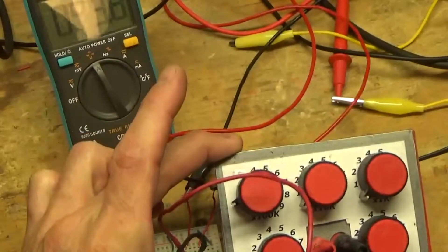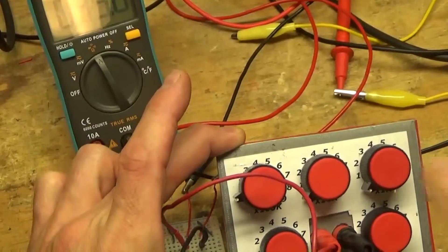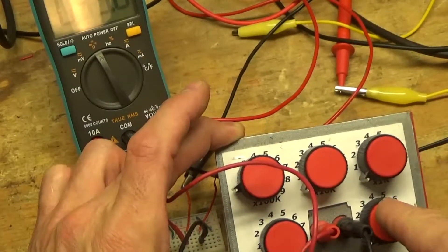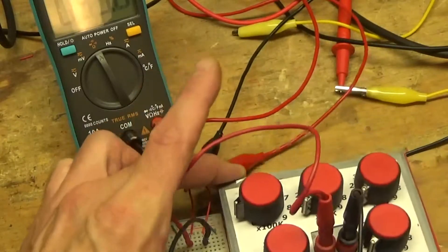So I put the knobs on here. I printed out a little guide here. So 100k, 10k, 1k, 100 ohm, and 10 ohms. Right now it's set for 100k.